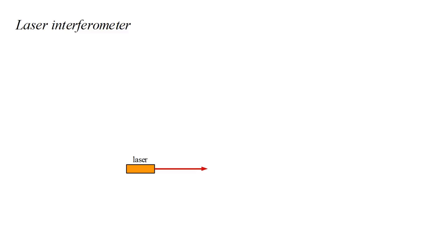A laser emits a beam of light with a wavelength of about one micrometer. The beam strikes a beam splitter, which splits the beam into two perpendicular paths. At the end of each path is a test mass, which in principle is in free fall. The goal of the interferometer is to detect the motion of these test masses due to a gravitational wave.